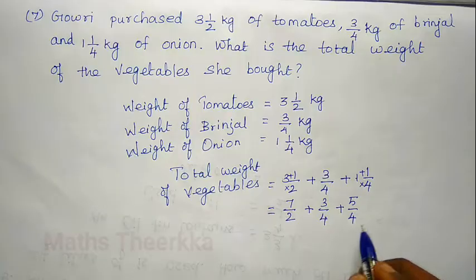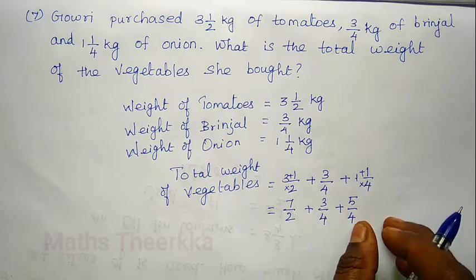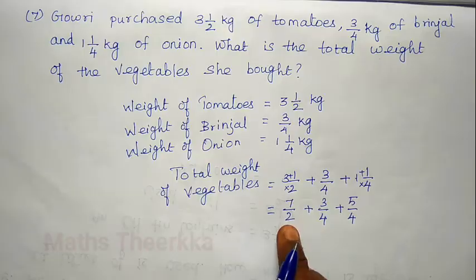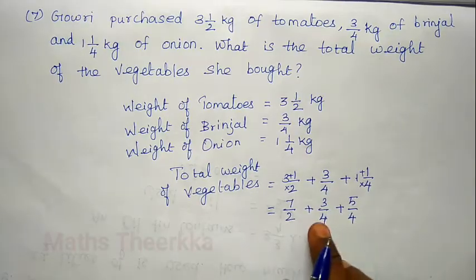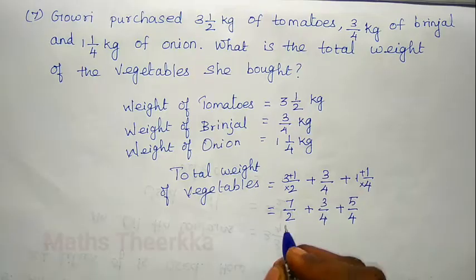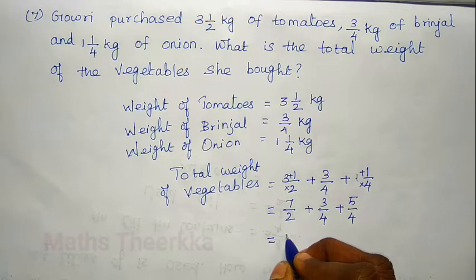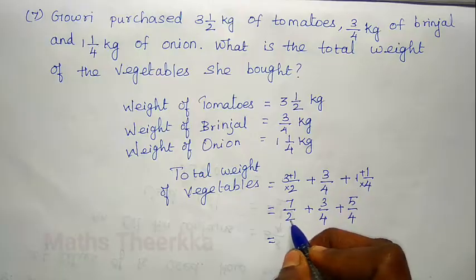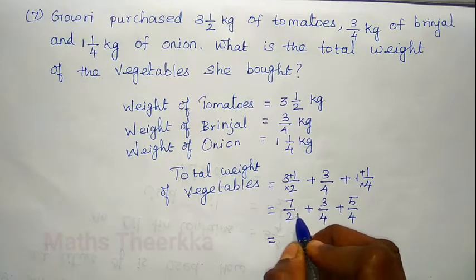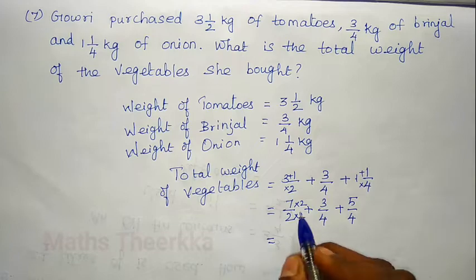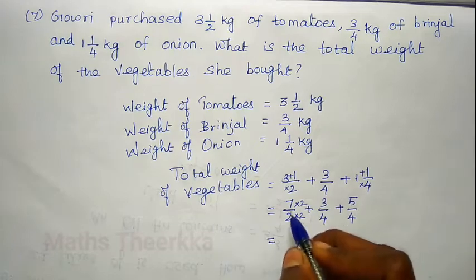Now, if you look at the denominators, the denominators are not all equal, so we need equivalent fractions. We make 2 equal to 4, so this gives us equivalent fractions with denominator 4.